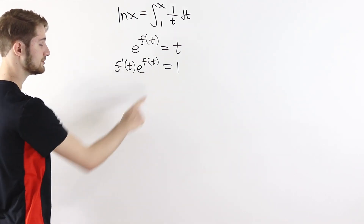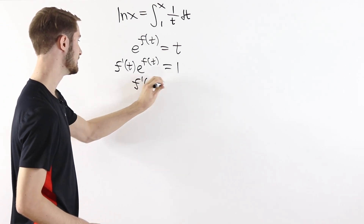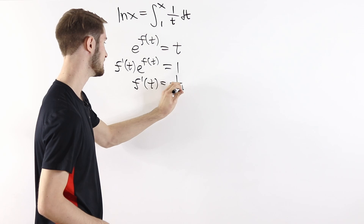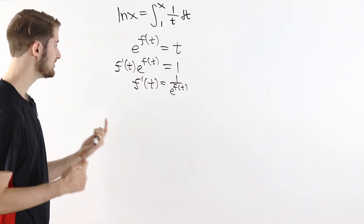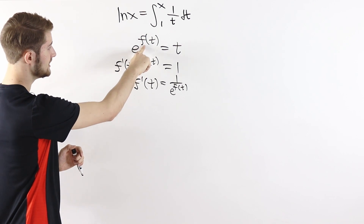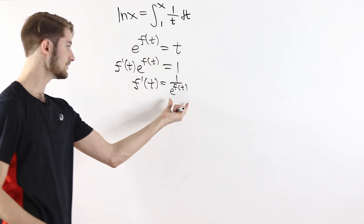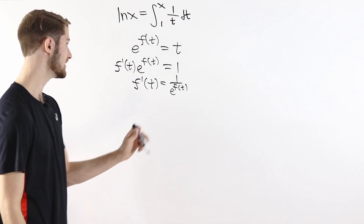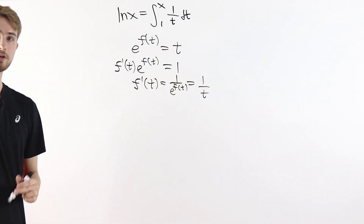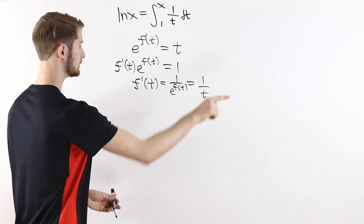With this equation, we can divide both sides by e to the f of t, and that gives us f prime of t equals 1 over e to the f of t. But remember from the definition of f, we have e to the f of t equals t. So the fraction 1 over e to the f of t is the same thing as 1 over t, and now we've proved that f prime of t equals 1 over t.